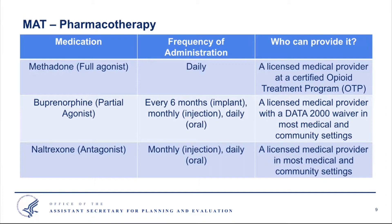Naltrexone is the third MAT pharmacotherapy. It's not an opioid or controlled substance, but an antagonist that achieves its action by covering rather than activating the opioid receptor. It blocks the euphoric effects of opioids and reduces craving, but a person must have fully discontinued opioids for seven to ten days prior to starting naltrexone, or they will immediately enter withdrawal when it's administered. There's no abuse potential with naltrexone.